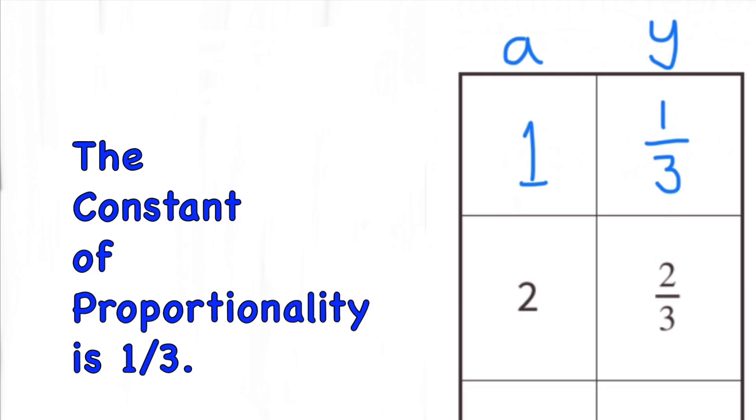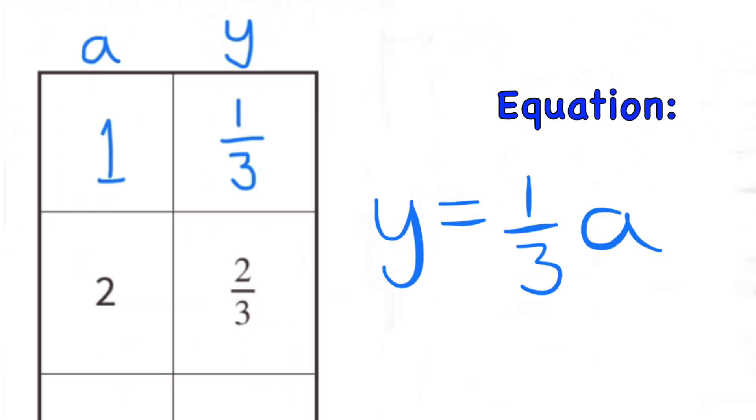The constant of proportionality is 1 third. An equation to represent this relationship is y equals 1 third a, or y equals 1 third times a, which is also equivalent to y equals a divided by 3.